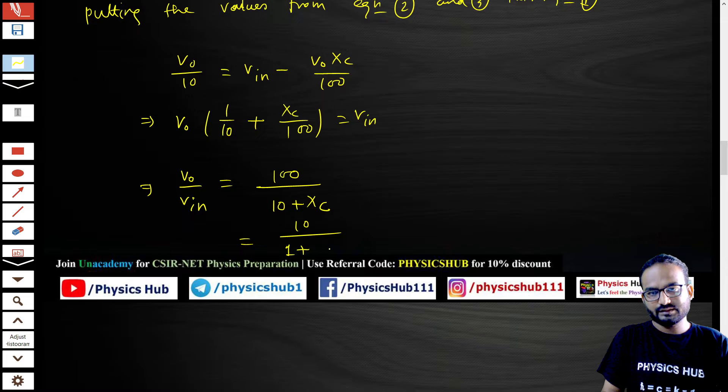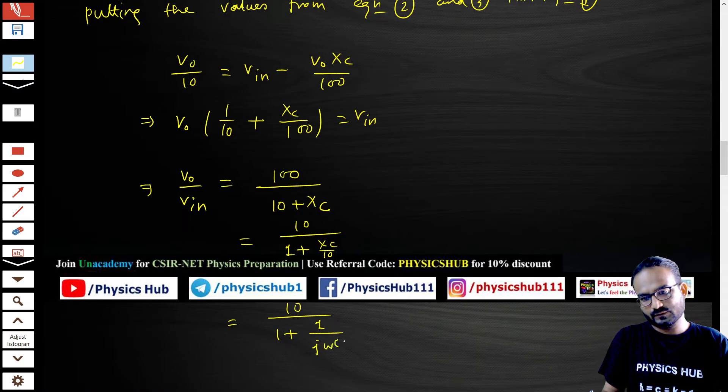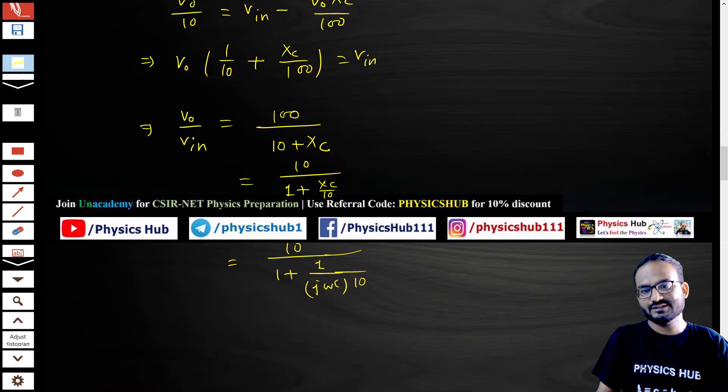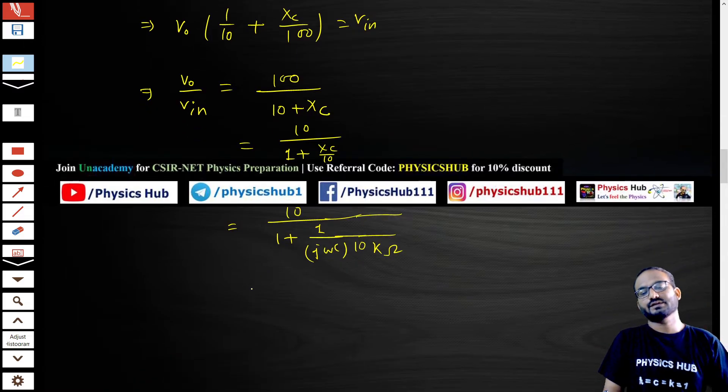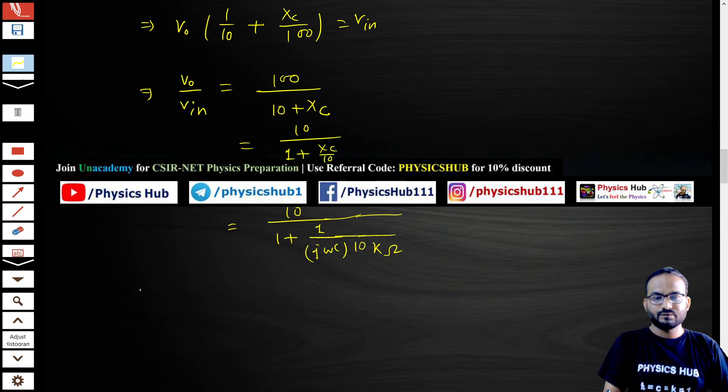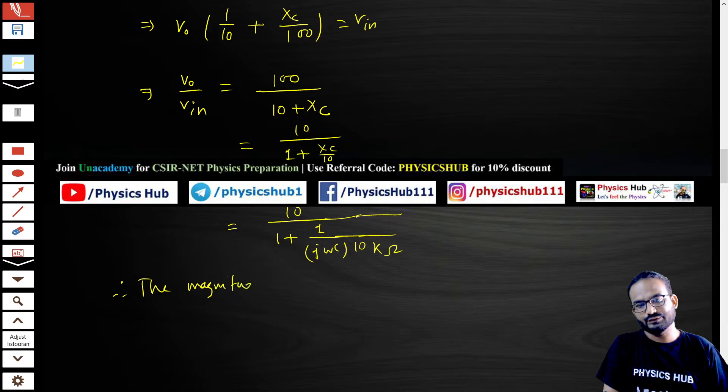This can be written by dividing by 10 both numerator and denominator: 1 plus X_C by 10. Now what is the value of X_C? X_C equals 1 by j omega C times 10, as I've already told you everything we have taken in kilo ohm, so this 10 is 10 kilo ohm. What is the magnitude of the voltage gain?